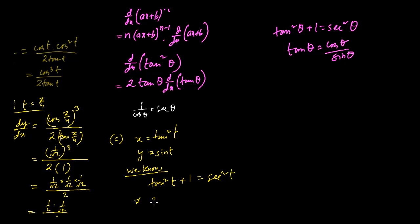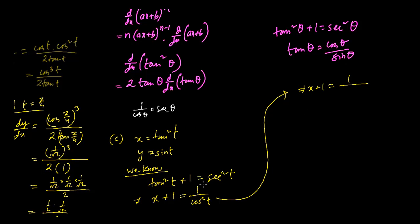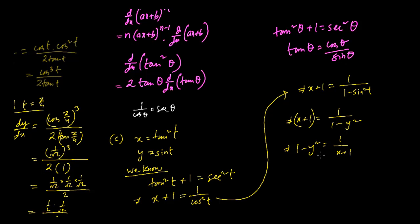Since tan² t = x, we write x + 1 = sec² t. Now sec² t = 1/cos² t, and cos² t = 1 − sin² t, so x + 1 = 1/(1 − sin² t). Since sin t = y, sin² t = y², giving x + 1 = 1/(1 − y²). Rearranging: 1 − y² = 1/(x + 1), so y² = 1 − 1/(x + 1). That's the Cartesian equation.